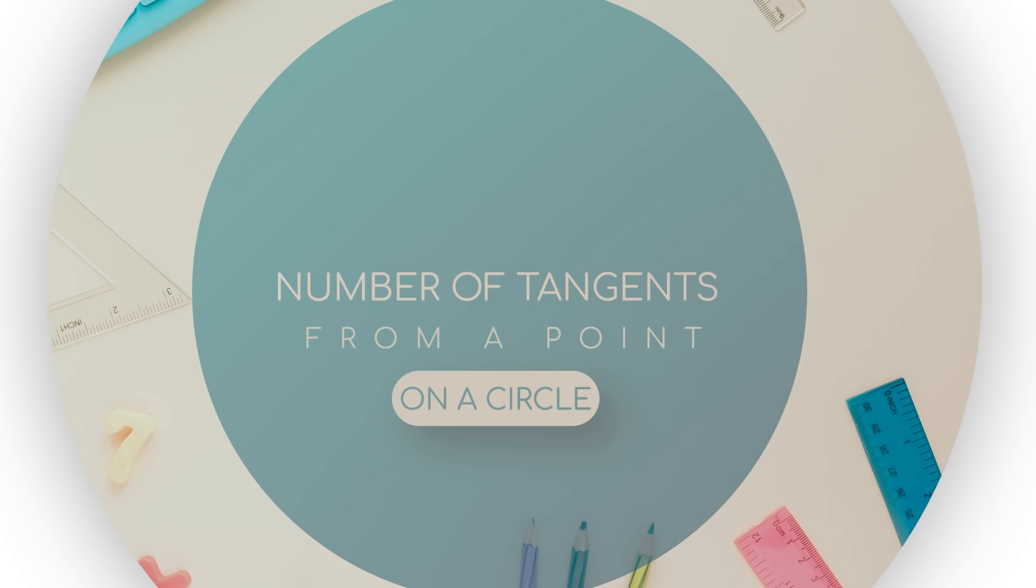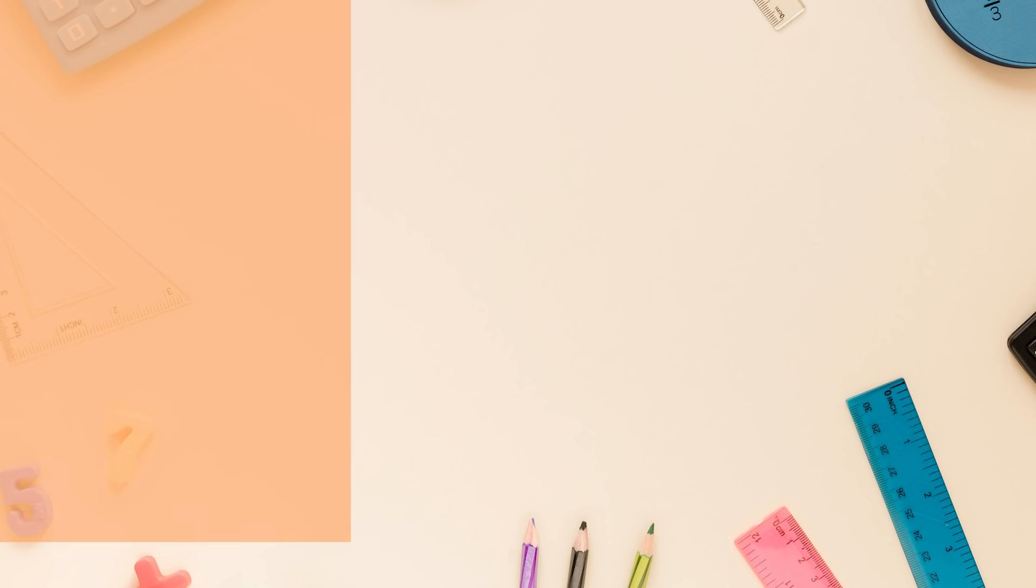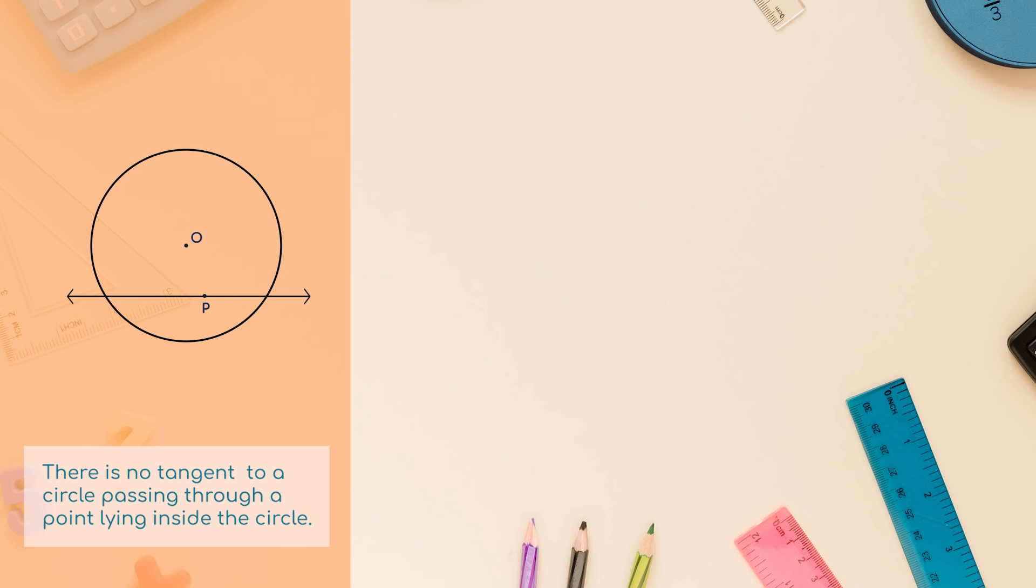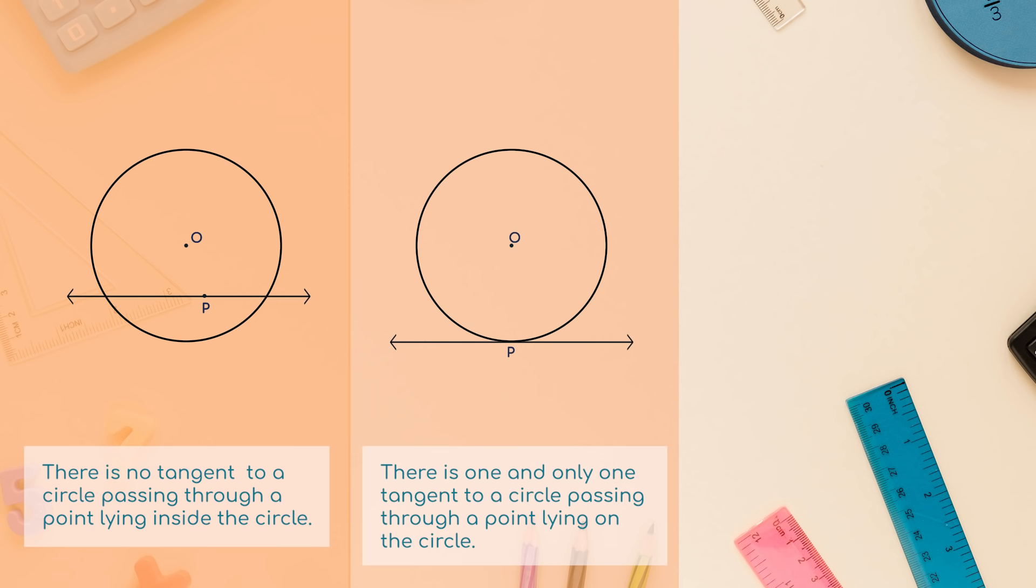Number of tangents from a point on a circle. Case 1: there is no tangent to a circle passing through a point lying inside the circle. Case 2: there is one and only one tangent to a circle passing through a point lying on the circle.